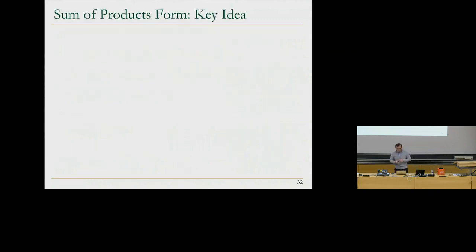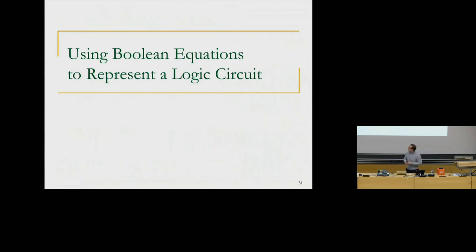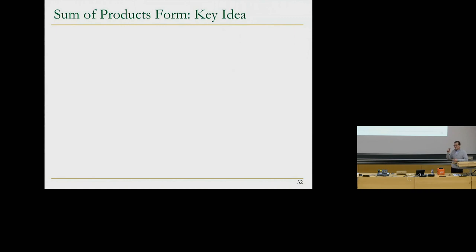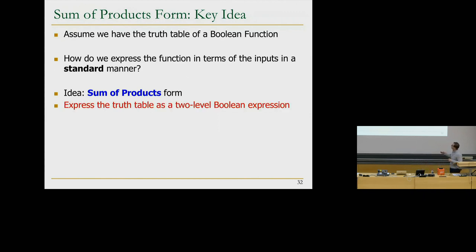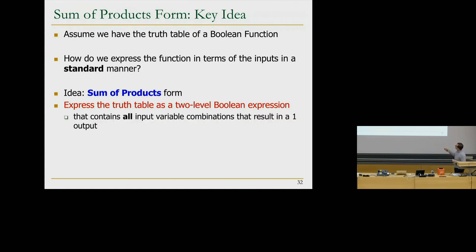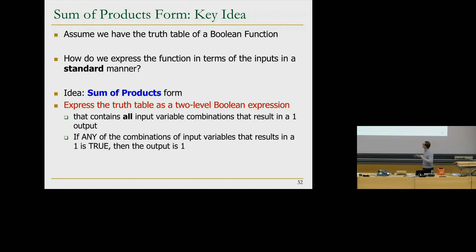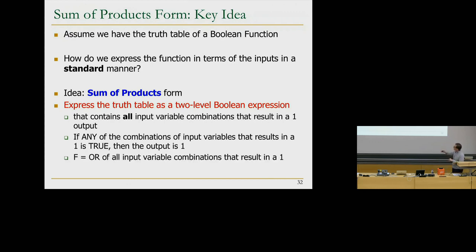Now we'll use Boolean equations to represent logic circuits more methodically. We'll develop the sum of products form. The key idea: given a truth table of a Boolean function, you express it as a two-level Boolean expression. Sum of products contains all input variable combinations that result in a one output. If any combination that results in a one is true, the output is one. You enumerate all those combinations in terms of literals, then OR those variable combinations.